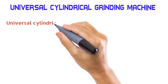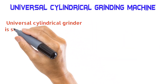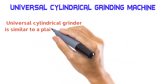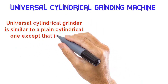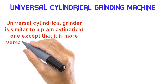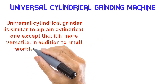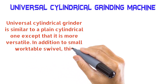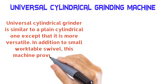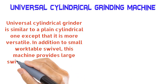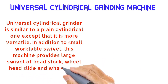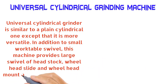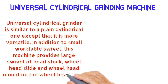The universal cylindrical grinder is similar to a plain cylindrical one except that it is more versatile. In addition to small work table swivel, this machine provides large swivel of headstock, wheel head slide, and wheel head mount on the wheel head slide.